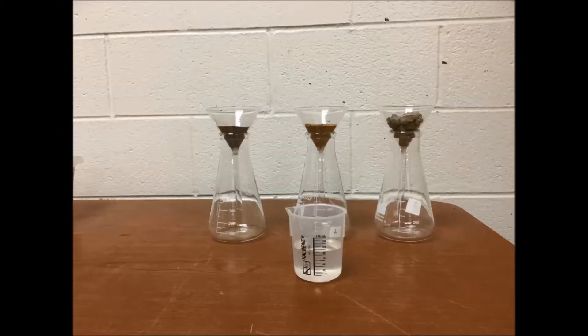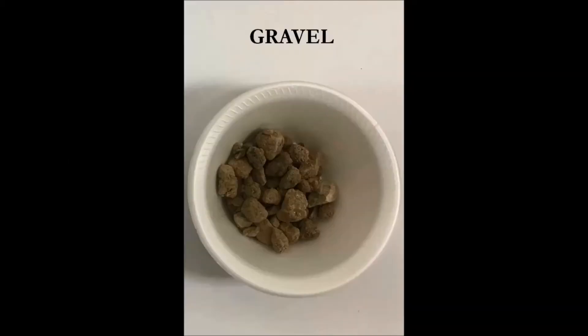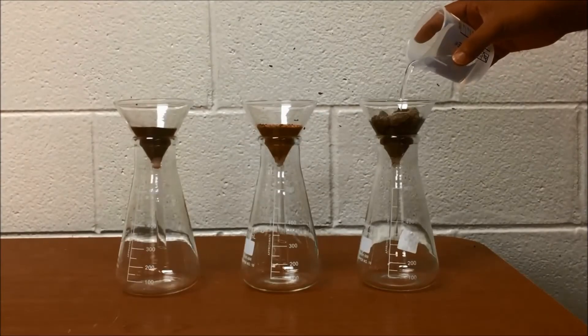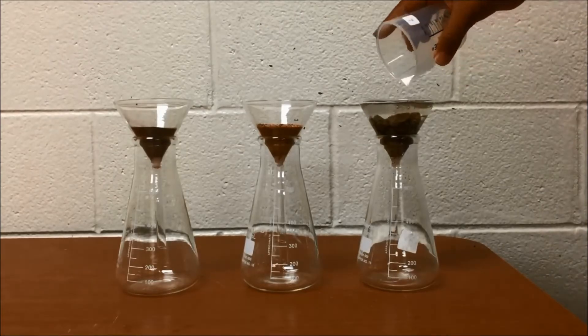This can be easily explained using a simple experiment. Three types of soil samples are taken: gravel, sand, and clay. They are placed in funnels and 100 milliliters of water is poured into each one.